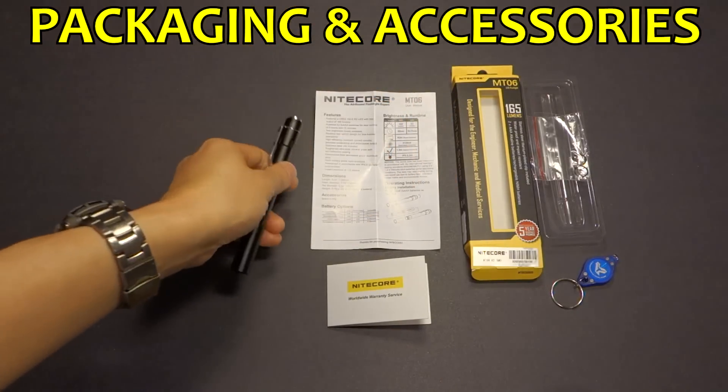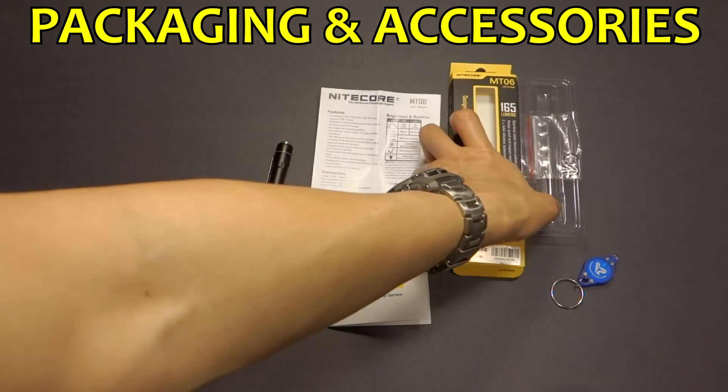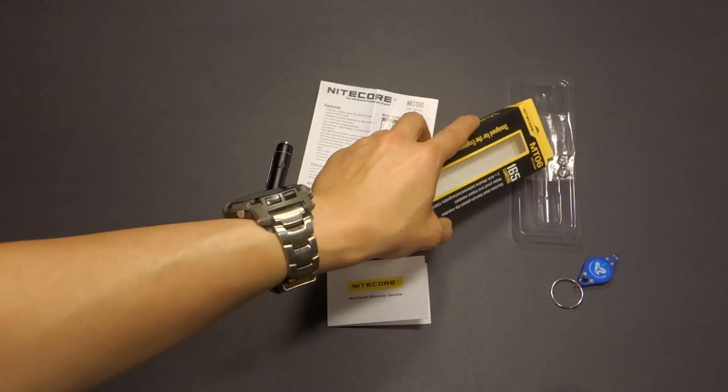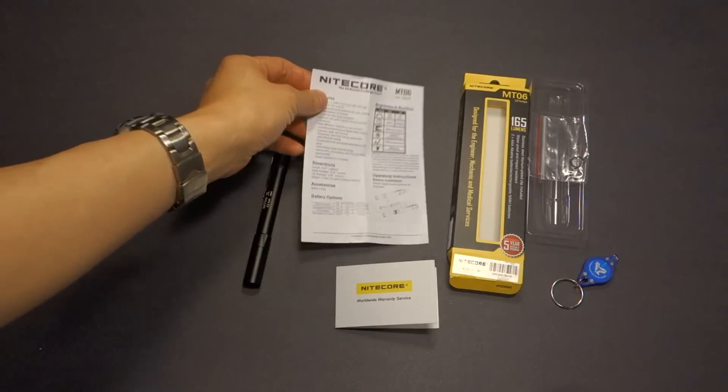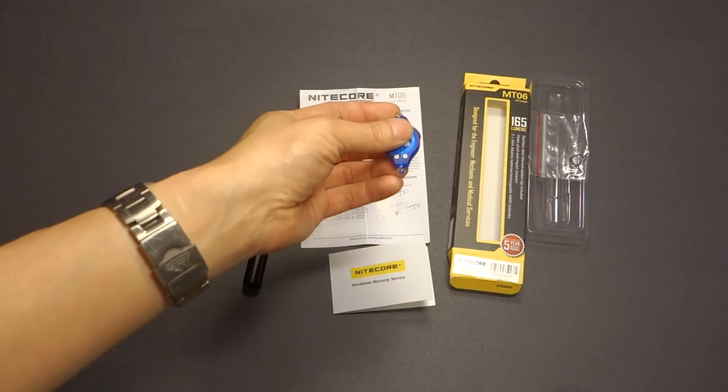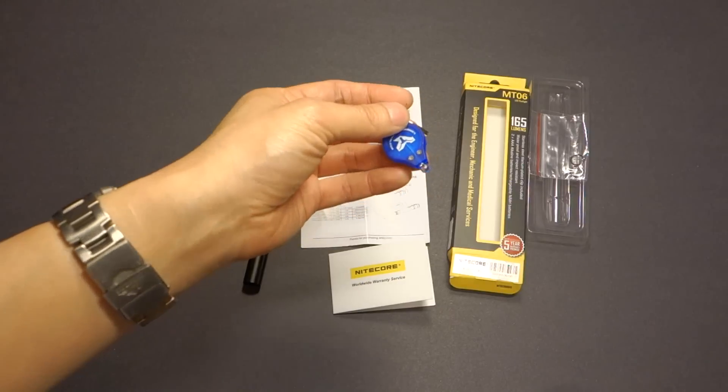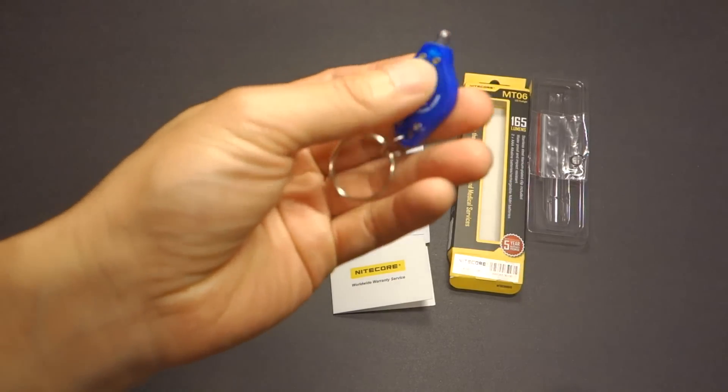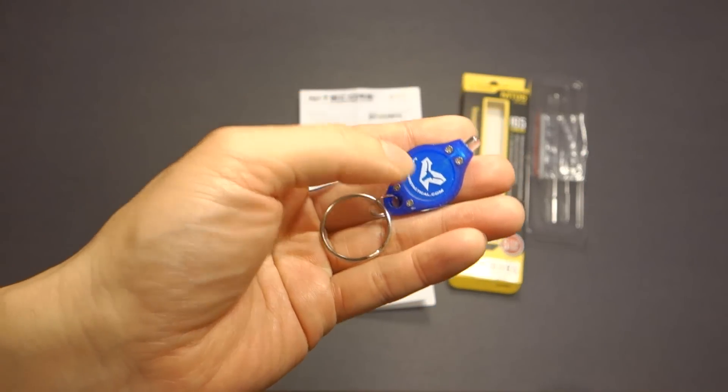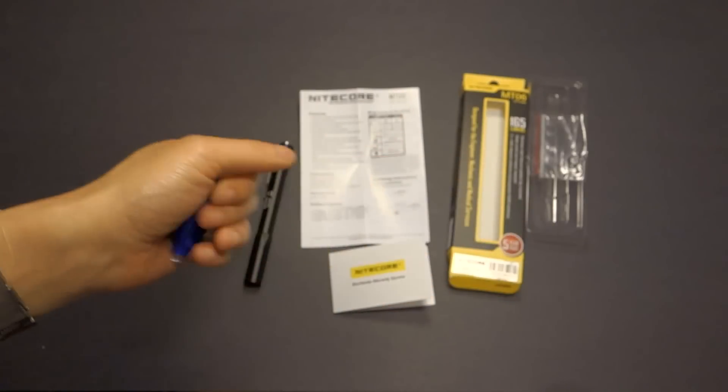The MT-06 came in this little cardboard box, their typical standard black and yellow coloring style. Plastic case, two spare O-rings, the instruction manual, the warranty card. Even though they sponsored it, I purchased it from an Amazon store called Lumen Tactical, and they threw in this little keychain light as well.